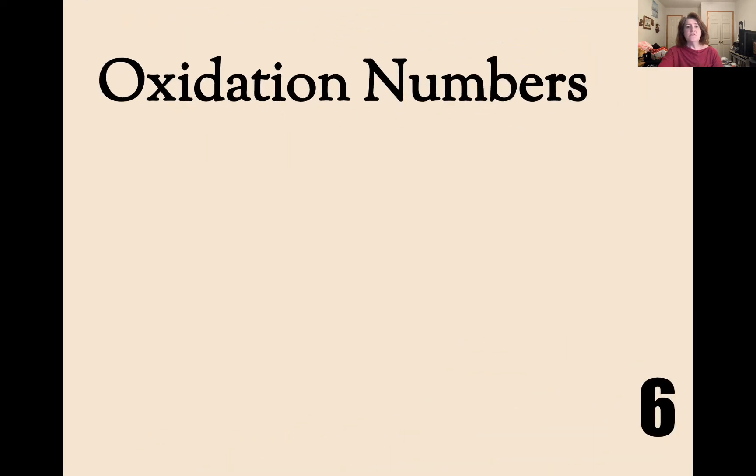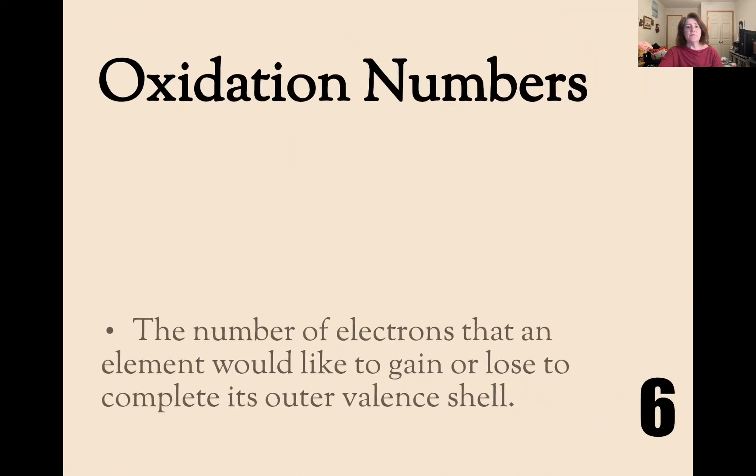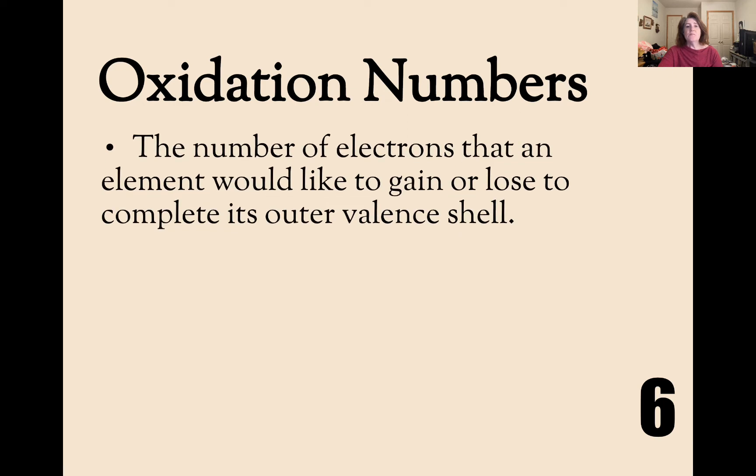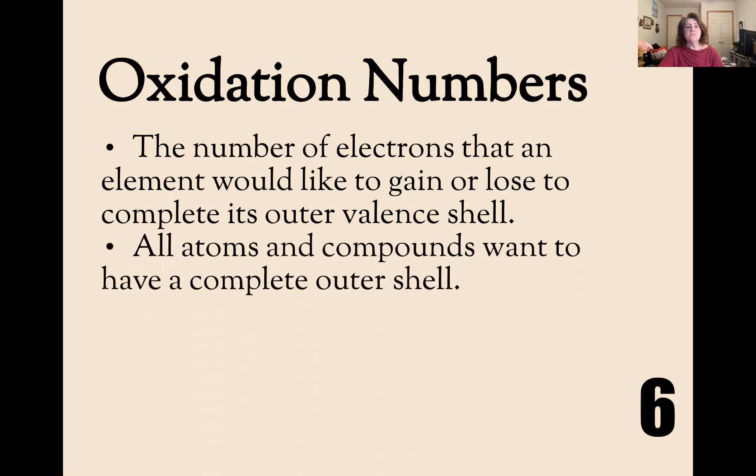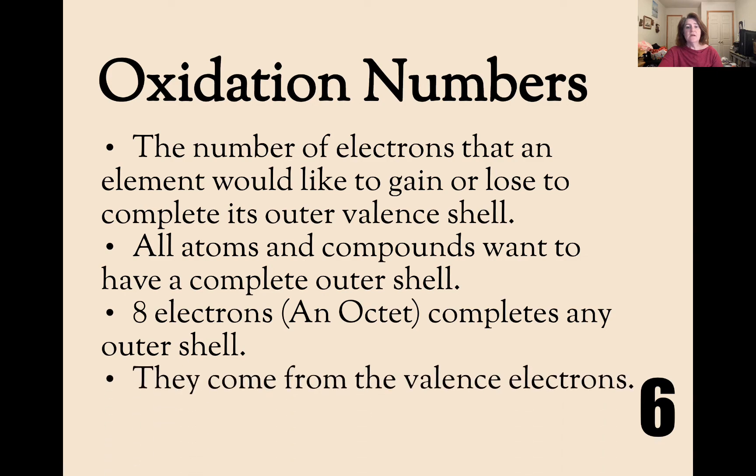Oxidation numbers, this is new. You're going to want your periodic table. The number of electrons that an element would like to gain or lose to complete its outer valence shell is known as the oxidation number. All elements and compounds want to have a complete outer shell. And 8 electrons, called an octet, completes any outer shell. They come from the valence electrons.